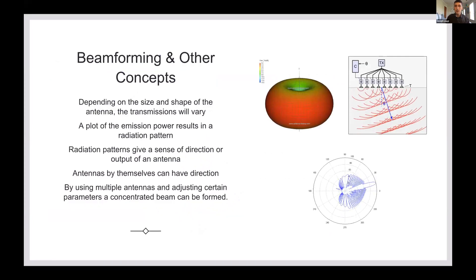Now we're going on to beamforming and other concepts. Depending on the size and shape of the antenna, the transmissions will vary. To the right we have a radiation pattern for a dipole antenna. It's a classic donut shape which doesn't really have a direction. But some antennas will have a clear directivity and we can see which direction it's going. The radiation pattern is just a plot of the power and the emissions.